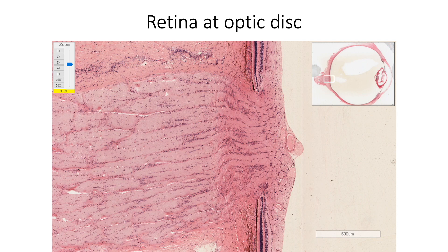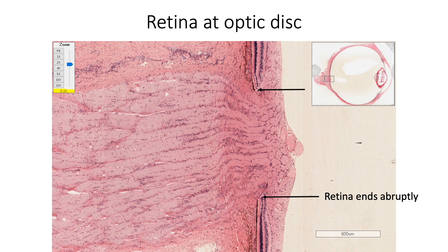Retina shows certain special features at the optic disc, macula lutea, fovea centralis, and at the ora serrata. At the optic disc, the layers of retina are absent, ending abruptly at its periphery. Since this area is devoid of photoreceptors, it is insensitive to light and hence is called the blind spot. Close to a million optic nerve fibers and retinal vessels are seen in this region.